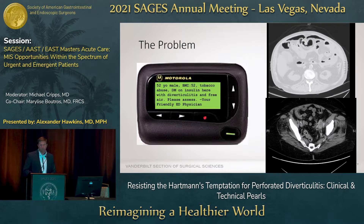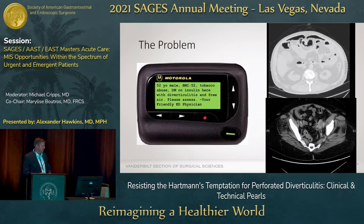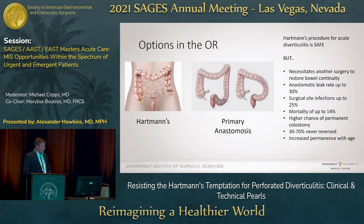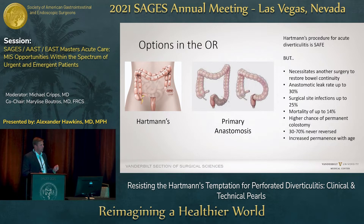Anybody who takes general surgery call has gotten some sort of page — 52-year-old male with obesity, tobacco abuse, diabetes, presenting with diverticulitis and free air. You turn on your computer, look at the scan, and this is the real deal. You've decided to take the patient to the operating room for perforated diverticulitis, and you're really faced with two options.